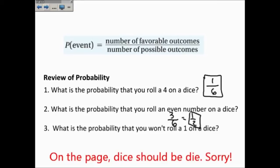Number 3, what is the probability that you won't roll a 1 on a dice? Not rolling a 1 is rolling a 2, 3, 4, 5, or 6. So there are 5 possibilities for that out of 6 total possibilities, and we have 5 sixths.